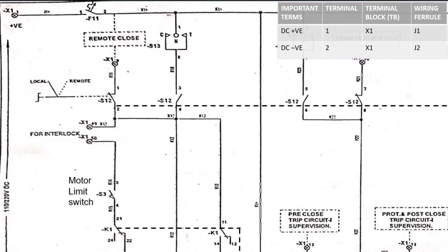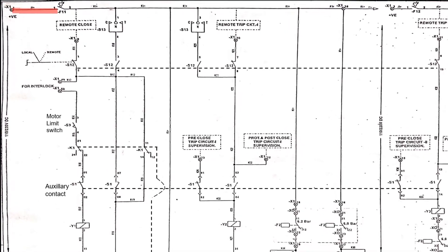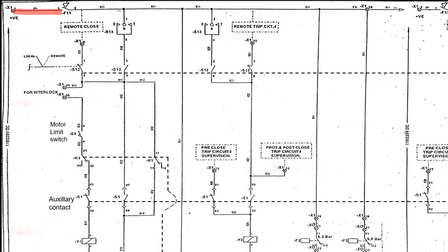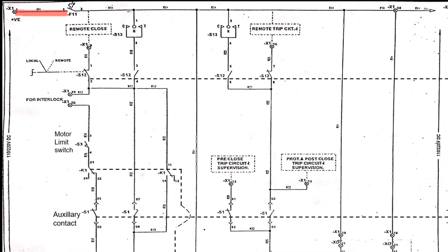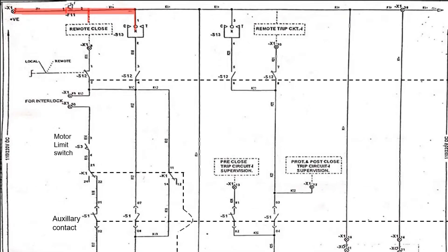The DC supply is given and the positive current flows like this. Current will stop when the fuse is out or not in service. When the fuse is in healthy condition and in service position, the current will flow. The current has two paths to flow, but the direction of current depends upon which path is selected, which is decided by the selector switch S12.